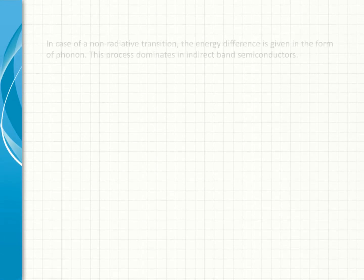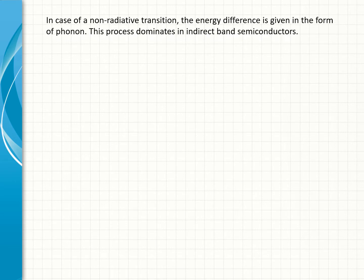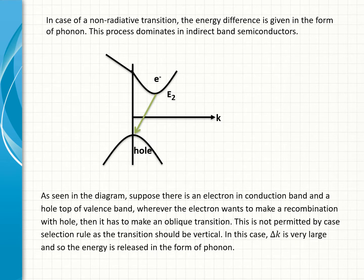In case of a non-radiative transition, the energy difference is given in the form of phonon. This process dominates in indirect band semiconductors. As seen in the diagram, suppose there is an electron in conduction band and a hole at top of valence band. Wherever the electron wants to make a recombination with hole, it has to make an oblique transition. This is not permitted by k selection rule as the transition should be vertical. In this case, Δk is very large and so the energy is released in the form of phonon.